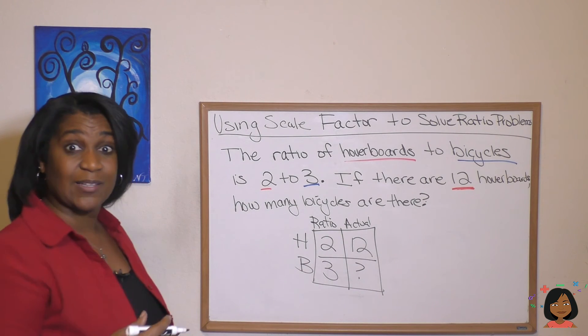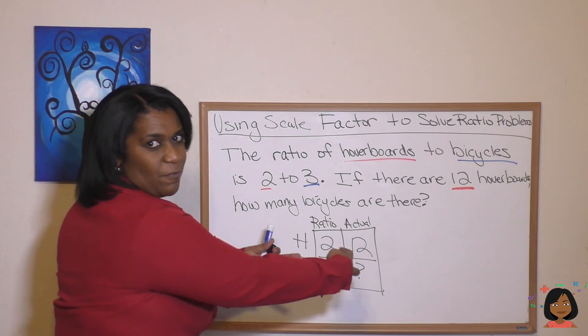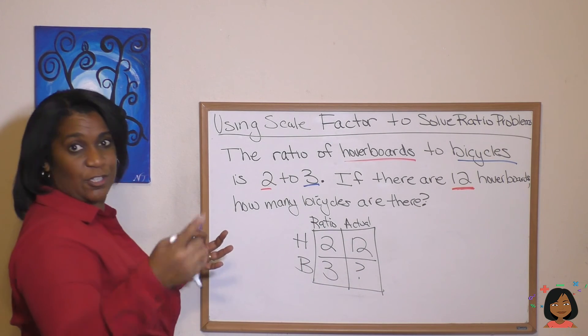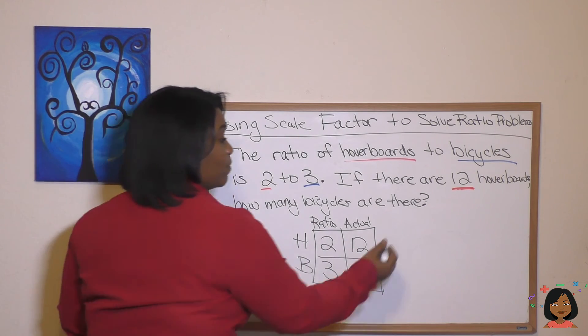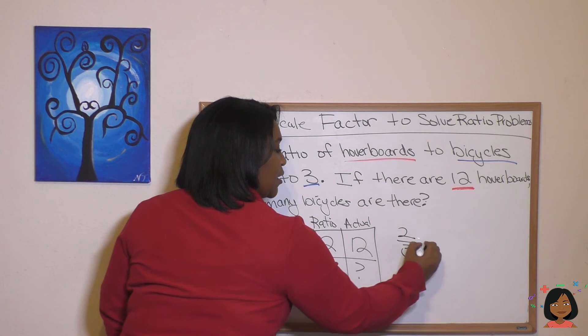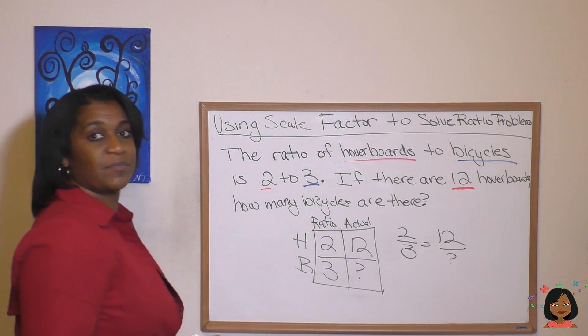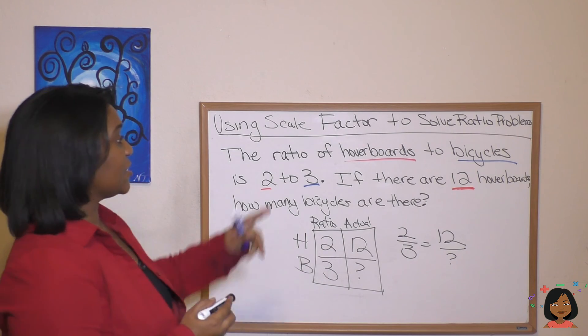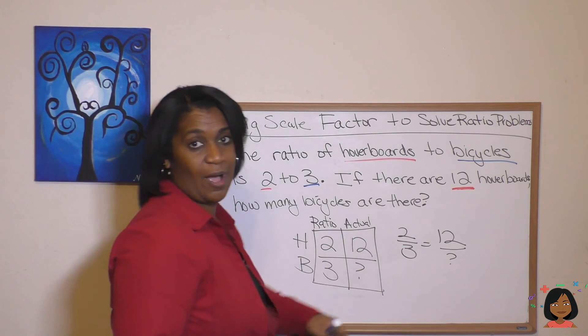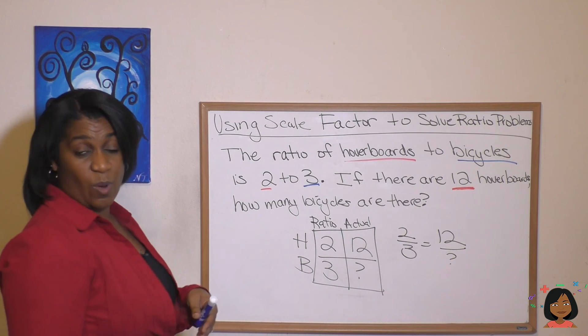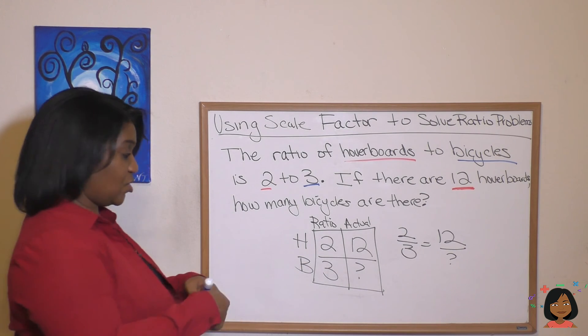Now let's set up this fraction. It's really like removing this box and what's left, you're just going to put an equal sign between the two. Two thirds equals 12 over my question mark. And now we need to figure out what's the scale factor to get from two to 12. Two times what is 12?